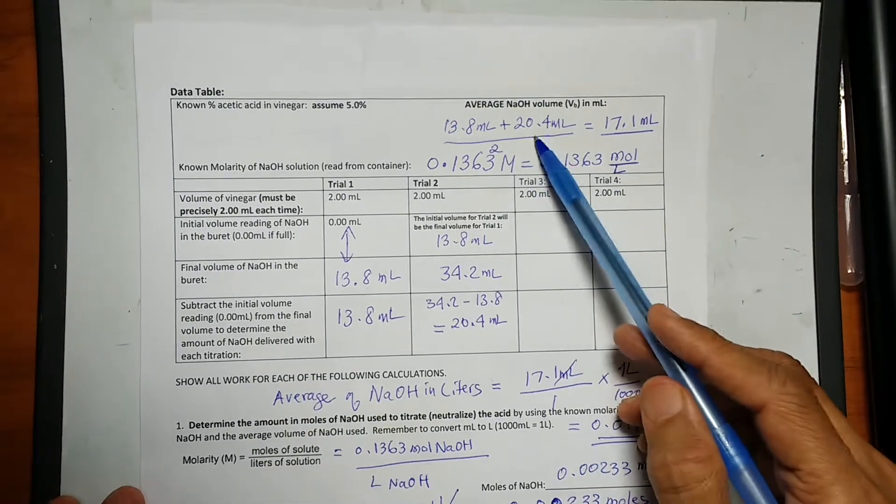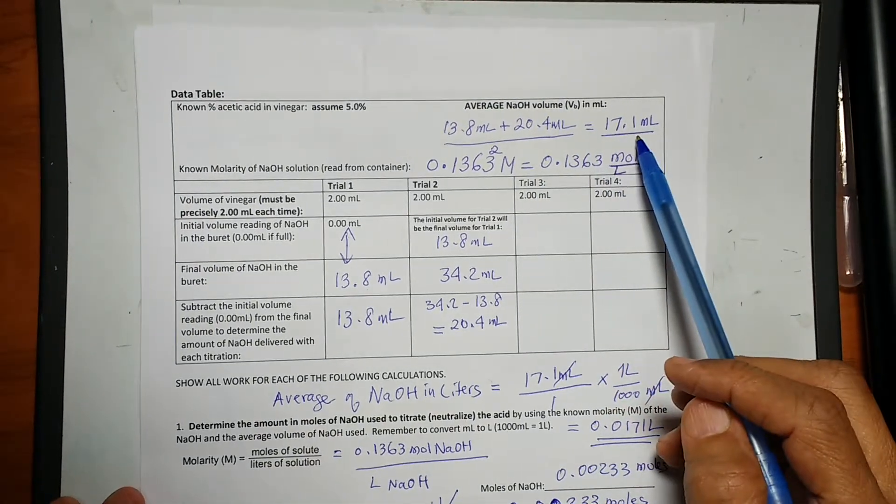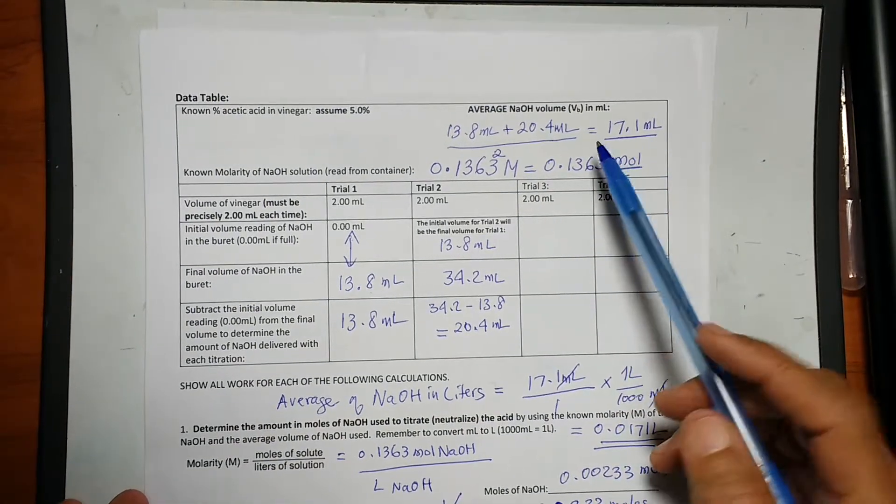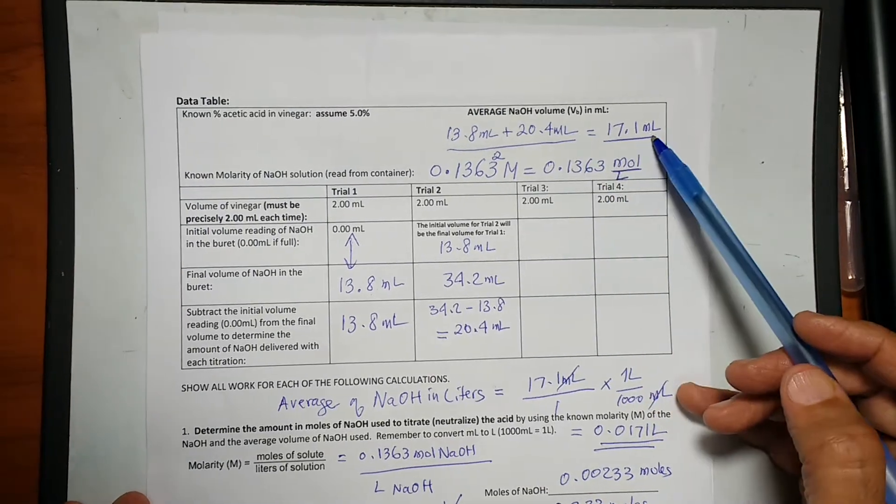Now I have to add those volumes together and then divide them by two, so I need to get the average of the milliliters.